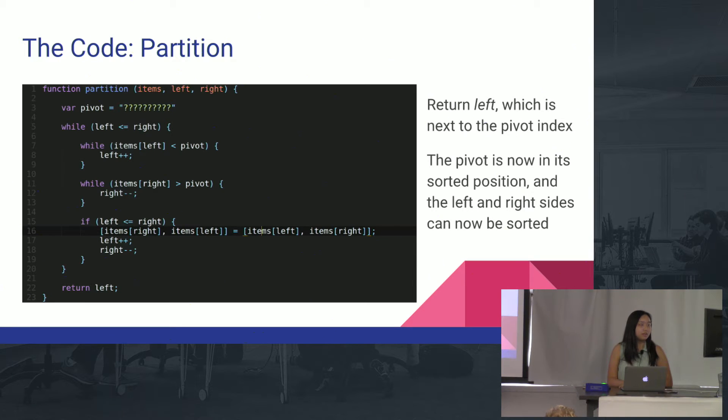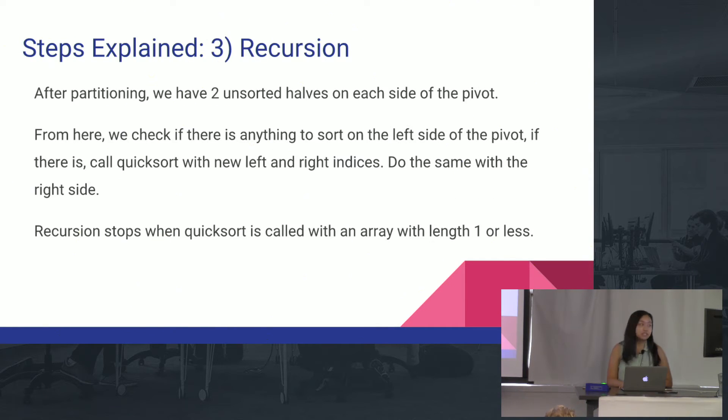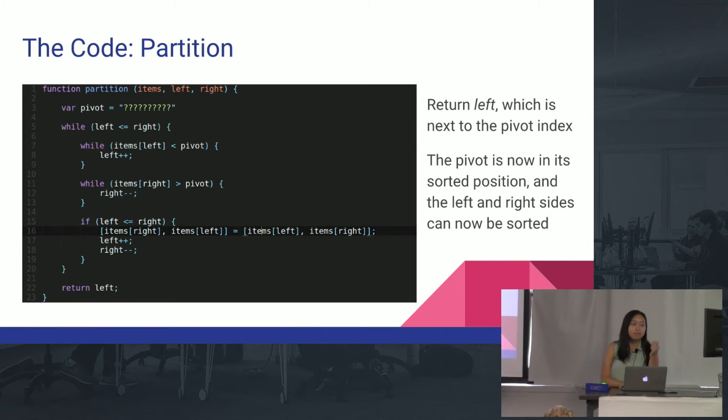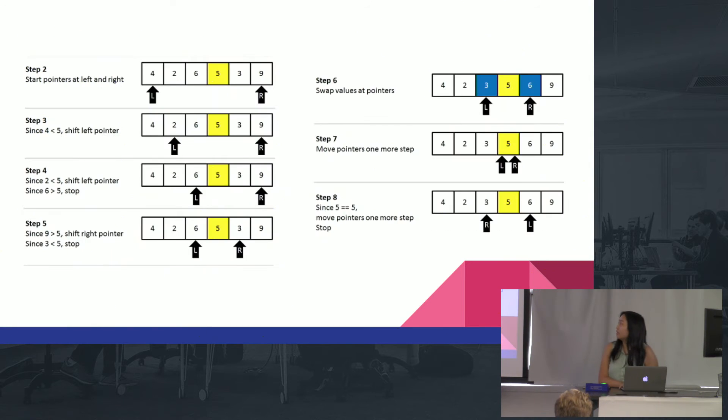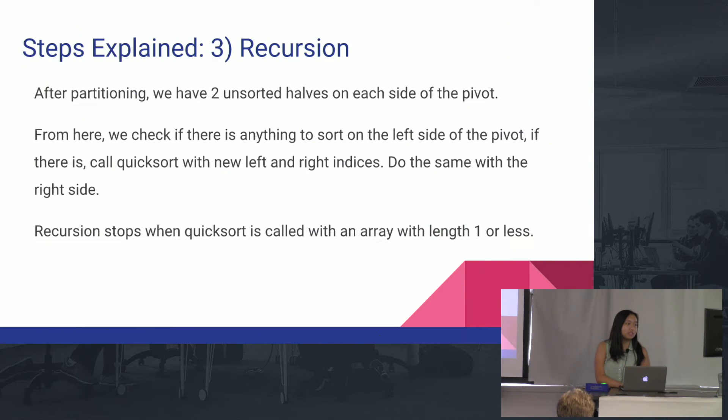So going on to step three, this is the recursion step. After partitioning, what's interesting about partitioning is that the pivot ends up being in its correct position. So in this array, the five is actually in its sorted position, so now you don't need to touch the pivot anymore. After partitioning, you can now ignore the pivot and start doing the quicksort on either side of the pivot. You have the pivot and you have two unsorted arrays on each side, and then you just call quicksort on those two arrays again.